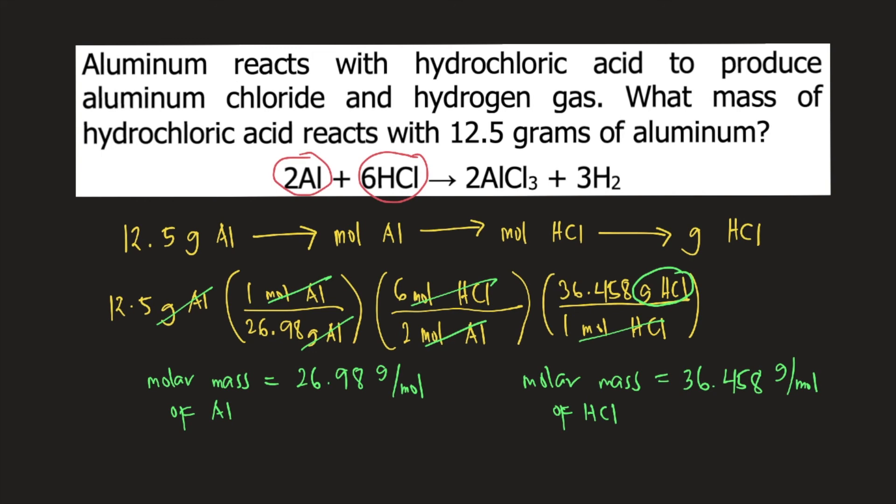The final thing to do is plug this into your calculator and solve for the grams of HCl. The answer is 50.7 grams of HCl.